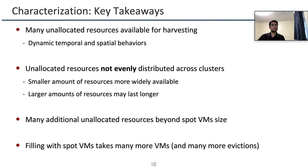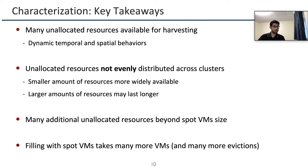Here are the high-level takeaways of our characterization. There are many unallocated resources available for harvesting, and these show both dynamic temporal and spatial behavior. These unallocated resources are distributed unevenly across clusters even within the same region. In particular, smaller amounts of resources are available more widely, but large amounts of resources tend to last longer. There are also many additional unallocated resources in each server beyond the minimum size of spot VMs. As a result, filling unallocated capacity with spot VMs can cause many evictions and wasted resources — hence, spot VMs are not ideal for effectively using the unallocated capacity.